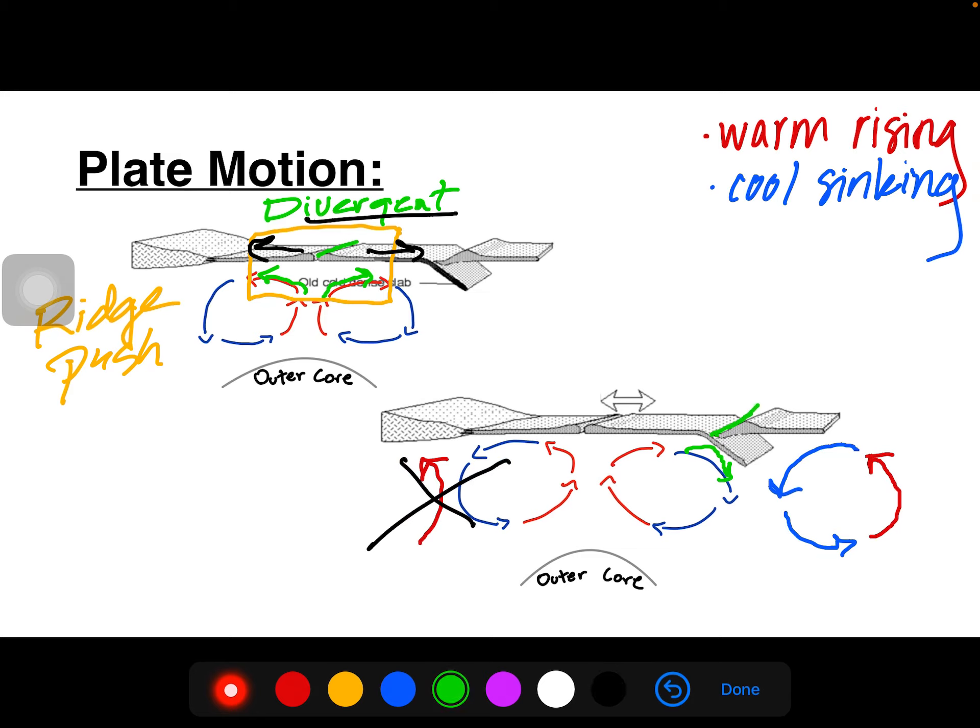So, again, back to this plate boundary, we're seeing two convection currents coming together and sinking down, causing the crust to do just that. This is, of course, then a convergent boundary.